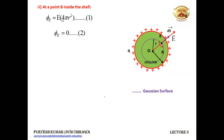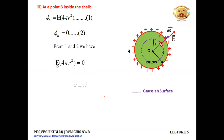Equating the two expressions: E times 4 pi small r squared equals 0. Since 4 pi cannot be 0 and r cannot be 0, E must be 0. The value of the electric field inside the charged spherical shell is 0.